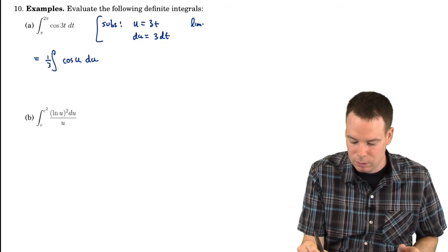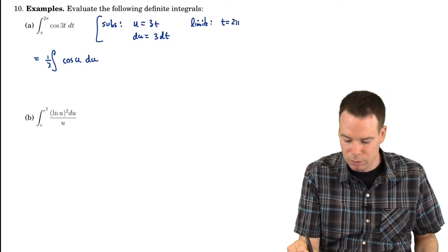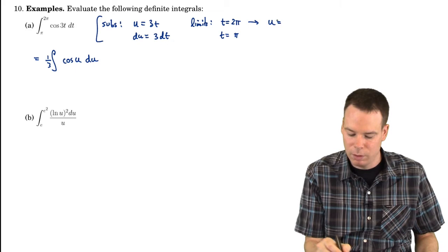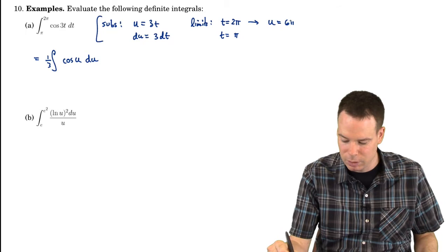So if I look at the limits of integration, they are t is equal to 2pi and t is equal to pi. What are our new limits of integration? Well, in terms of our variable u, u is equal to 3 times t. So if t is 2pi, then u is 6pi.